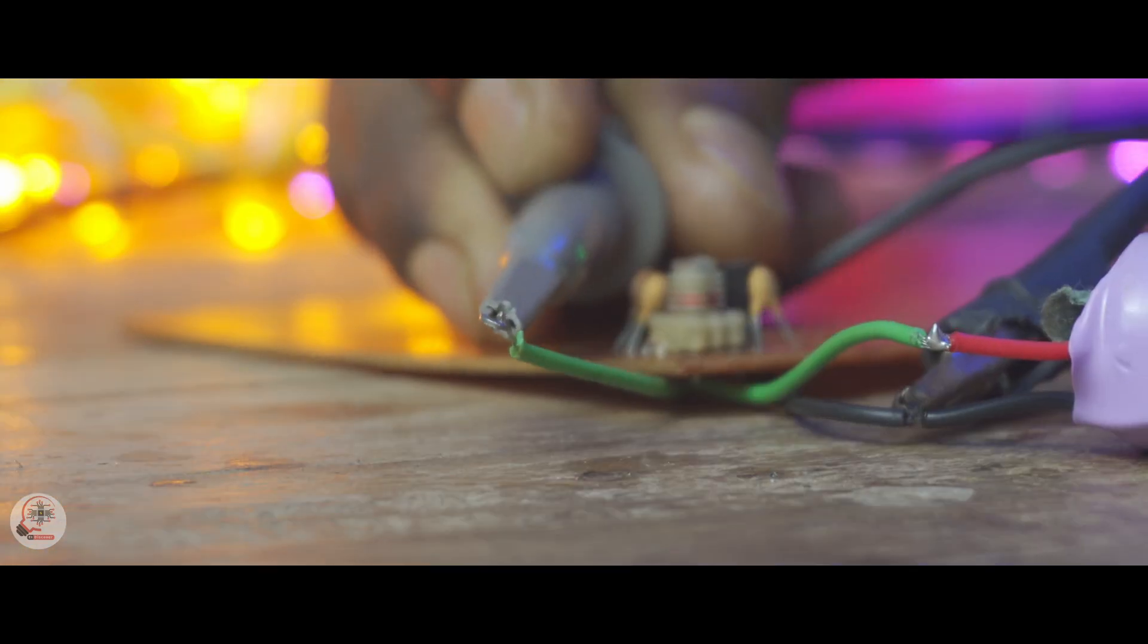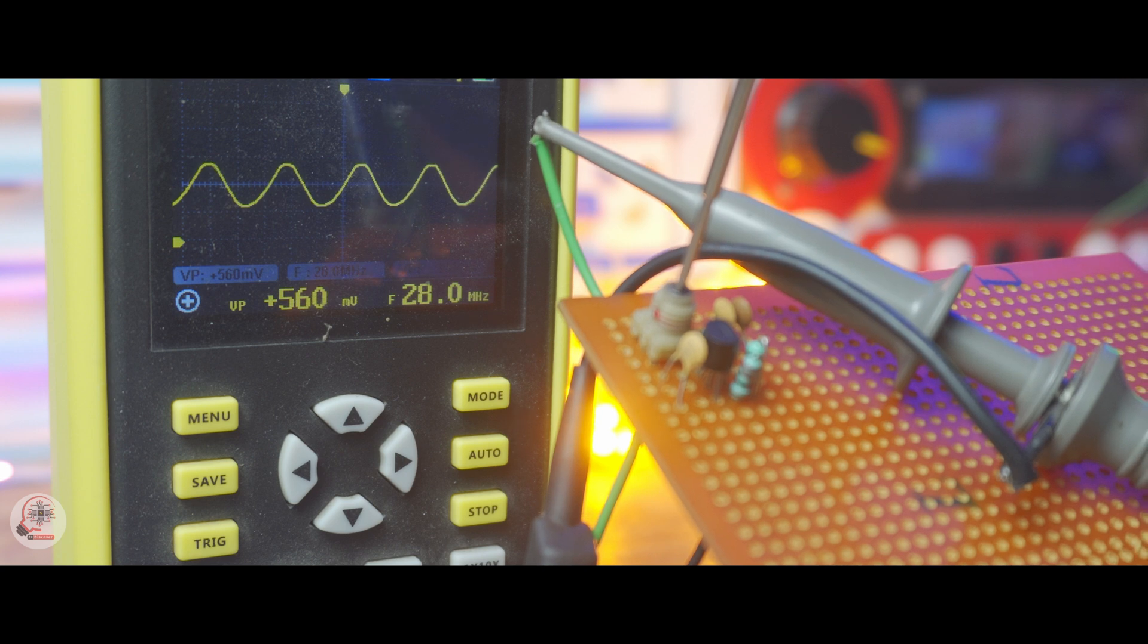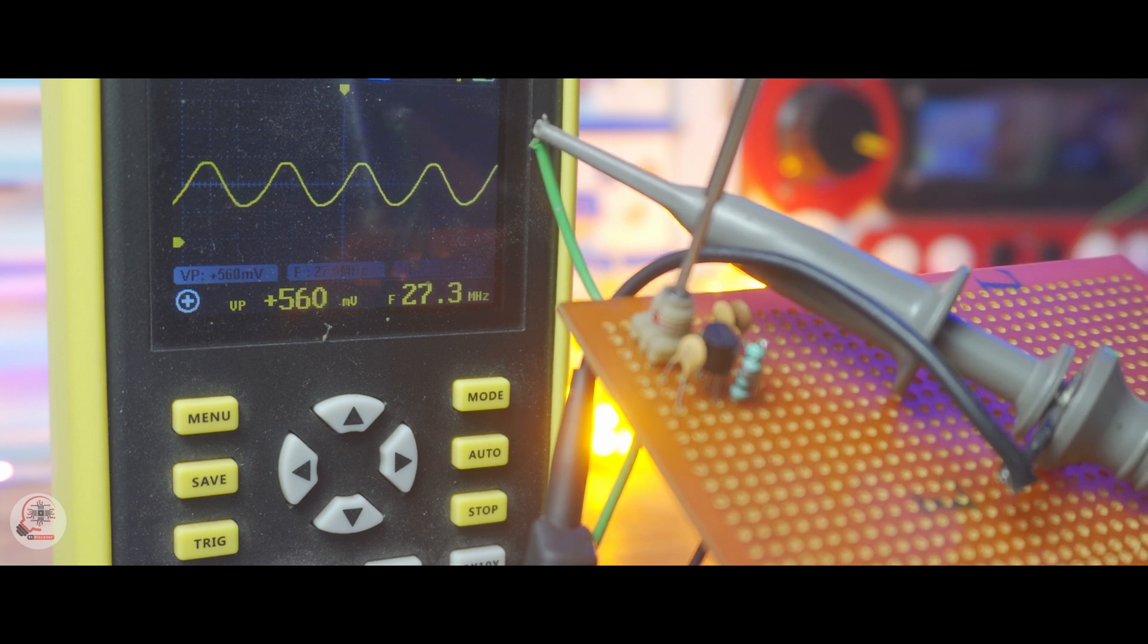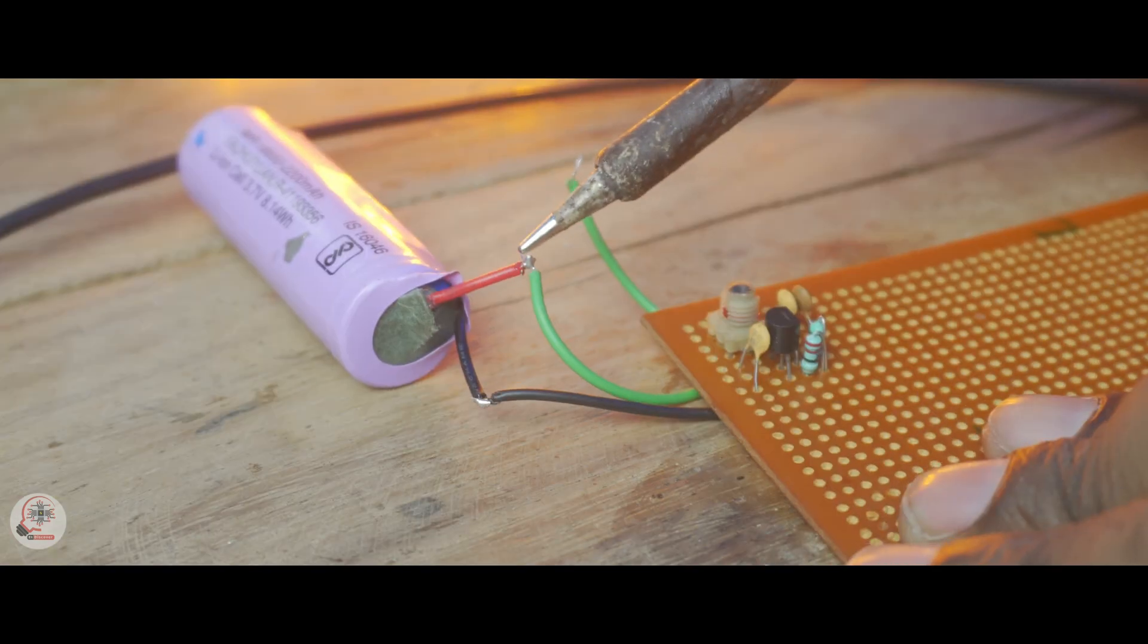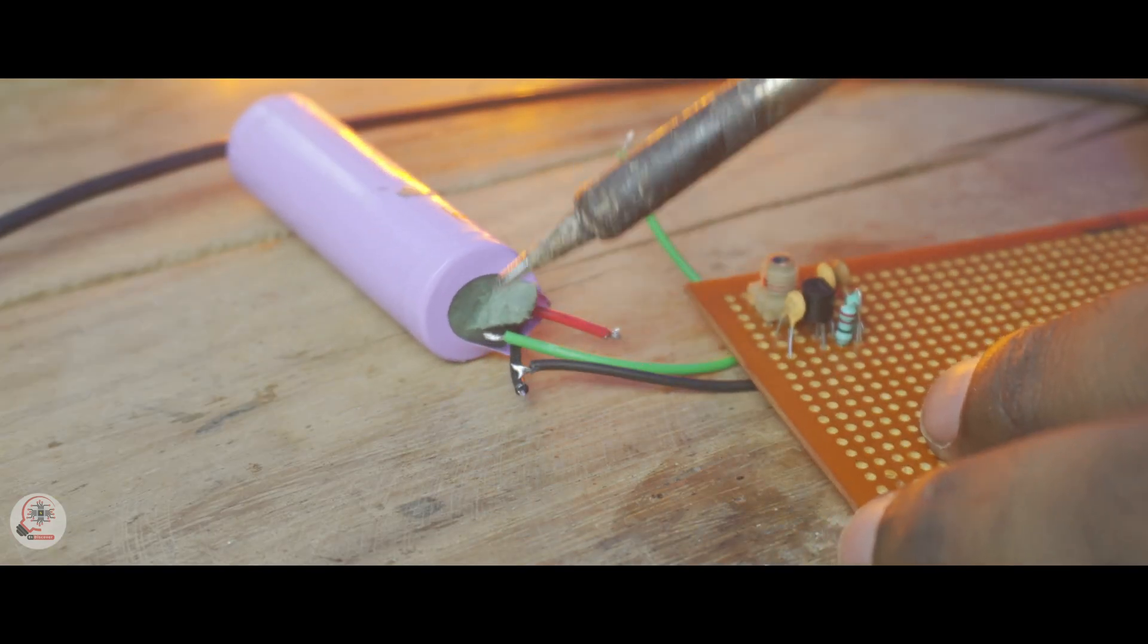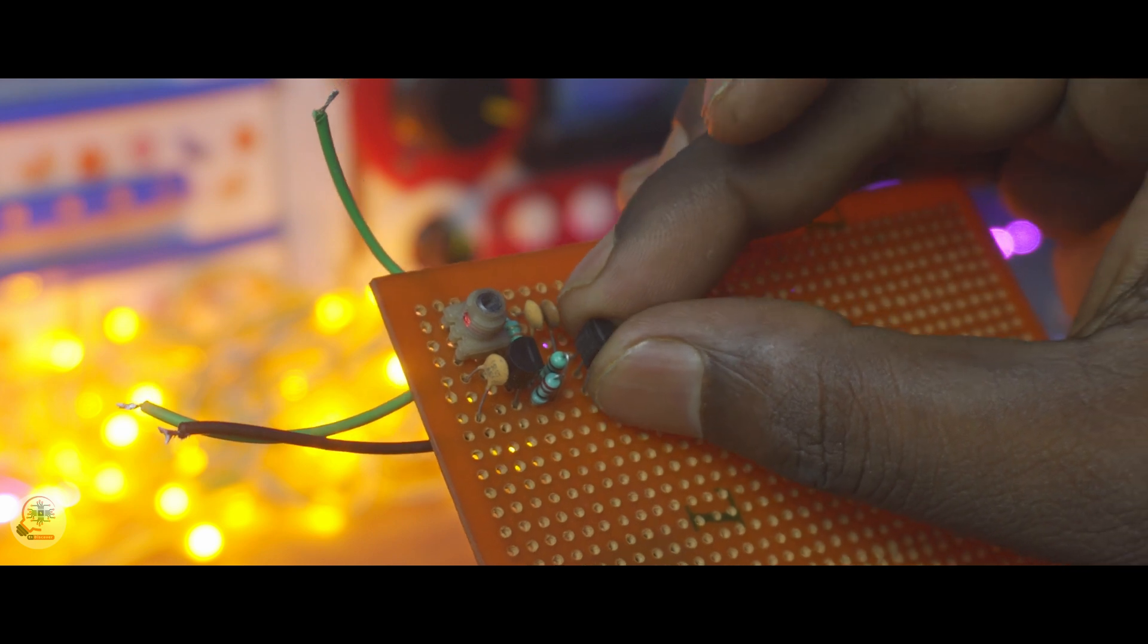Next I connect the oscilloscope to see the frequency. Since I need 27 MHz I will tune the 27 MHz frequency because it is the only public frequency in India. When I realize my transmitter is working properly, I mount this on-off transistor which is for data signal.